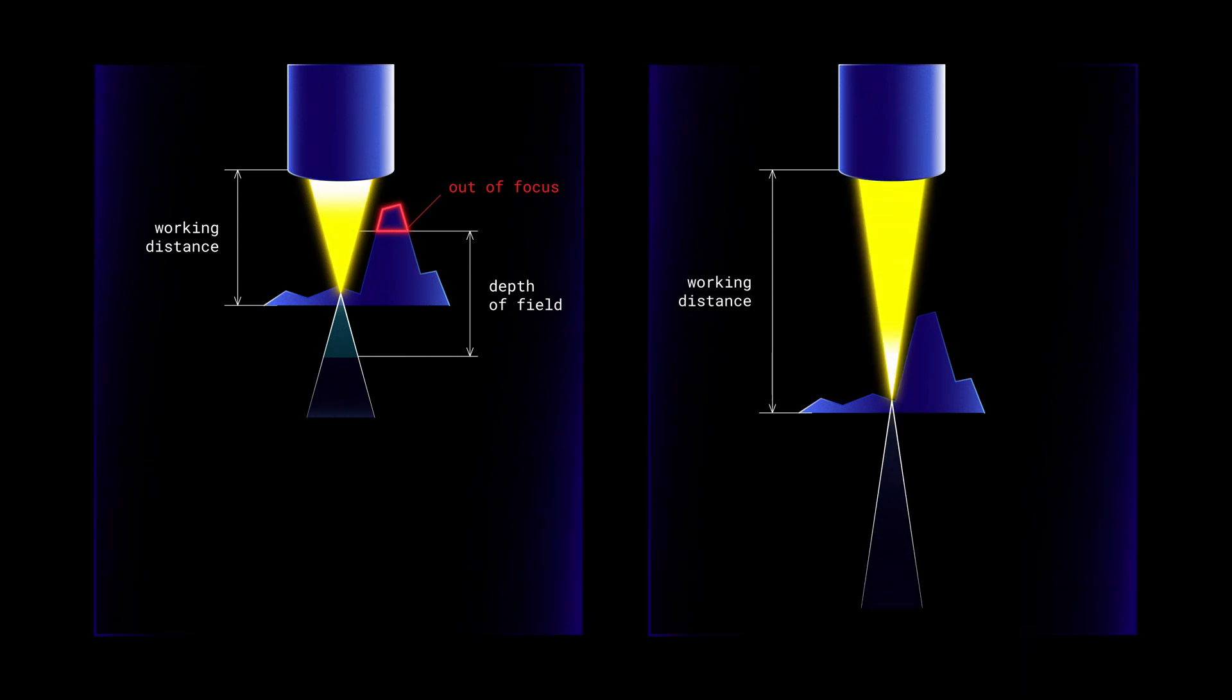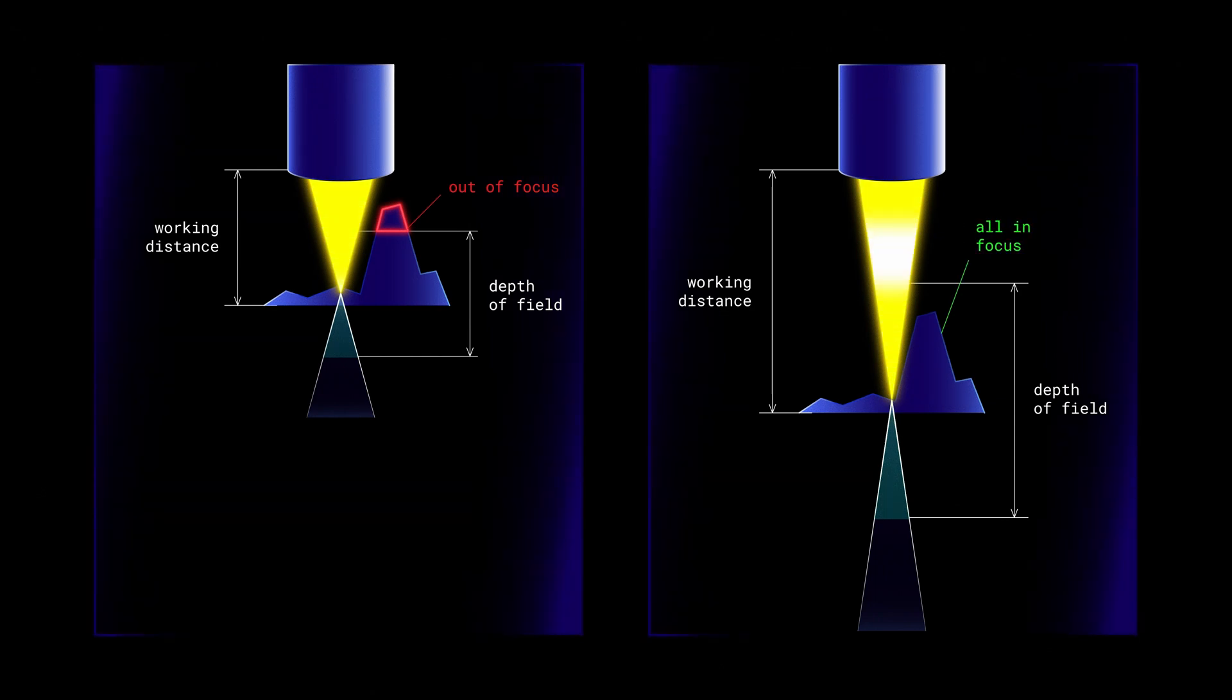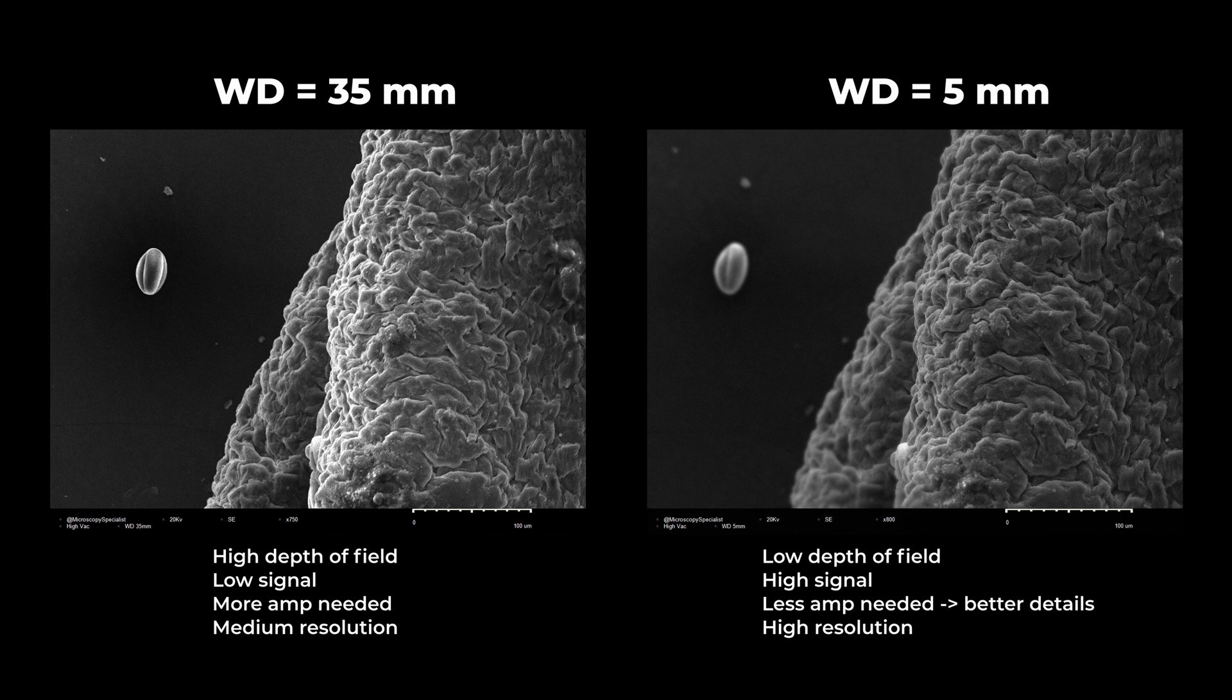When increasing the working distance, we increase the zone along the z-axis in which the spot size will be small enough to produce the in-focus image. Therefore, when increasing the working distance, the depth of field increases.